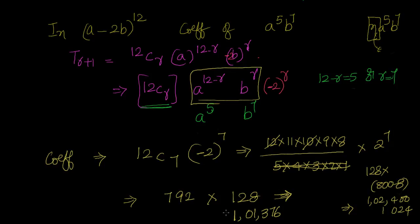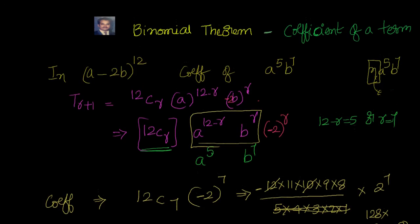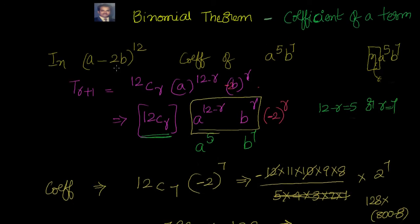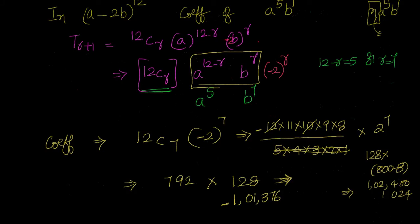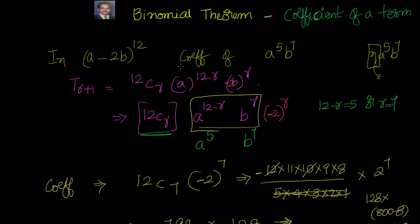This is how you find the coefficient of a particular term. You are given the binomial expansion and asked for variables with a particular exponent. From the generic equation, find the value of r, then find the remaining coefficient of the generic term — that is your answer. Thanks for visiting. In the next video we will look at the term independent of x.